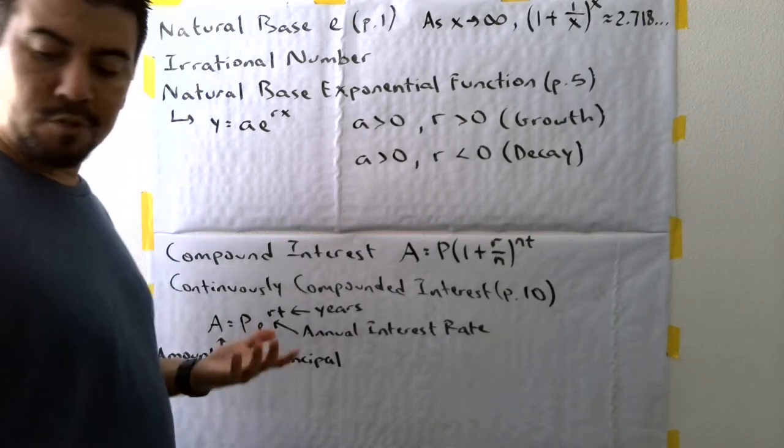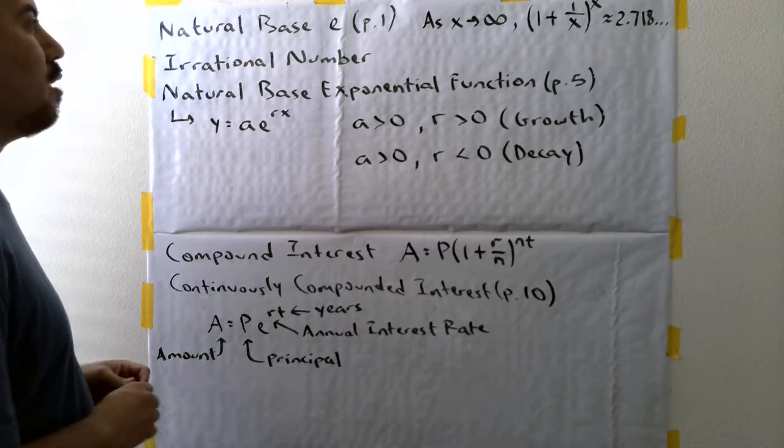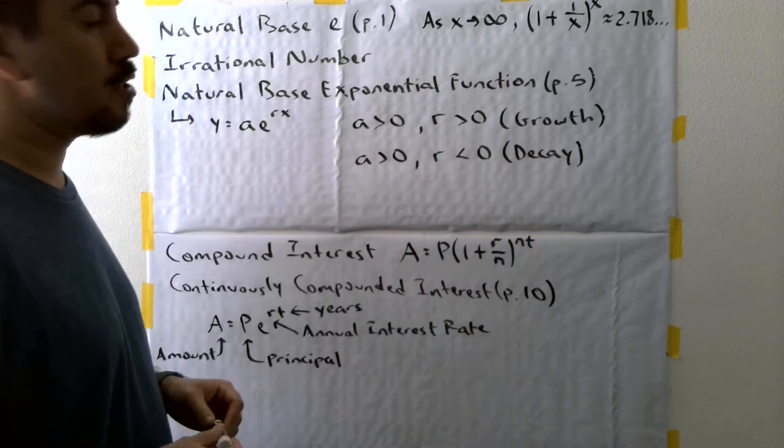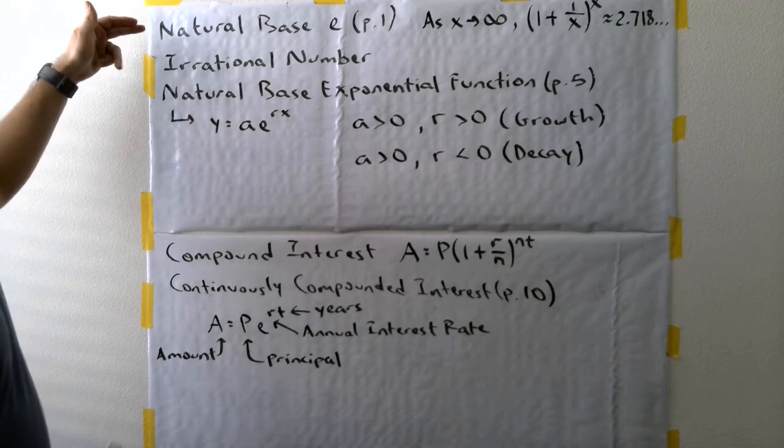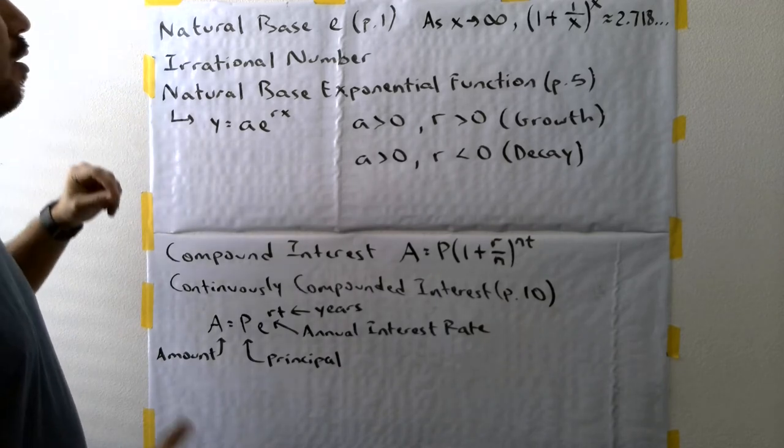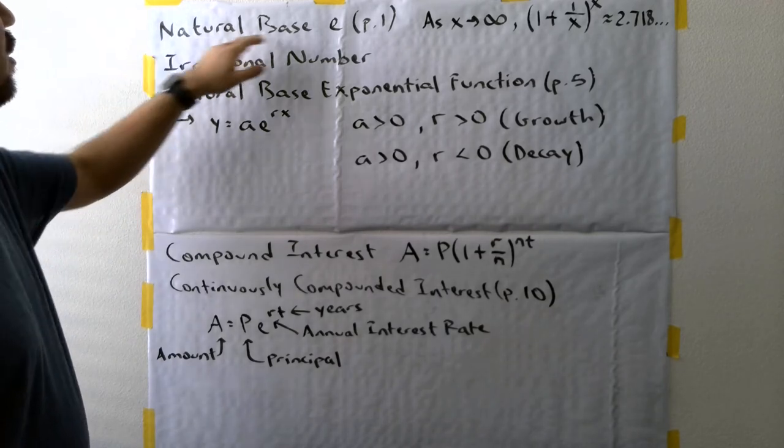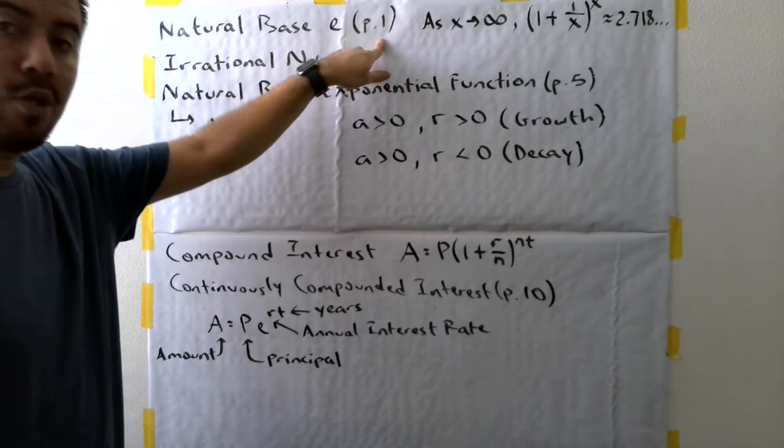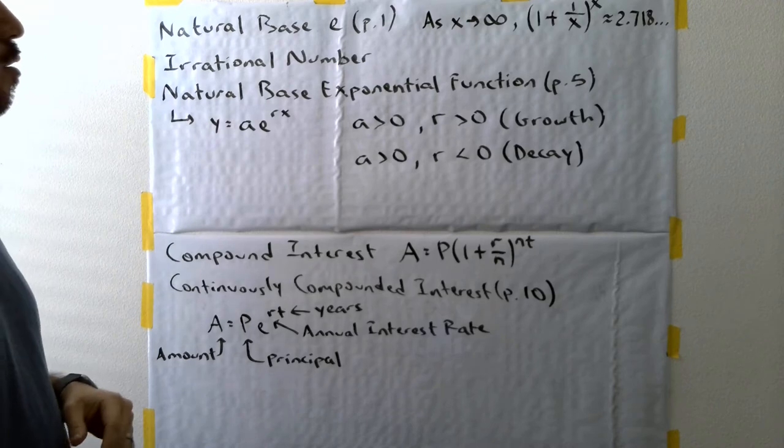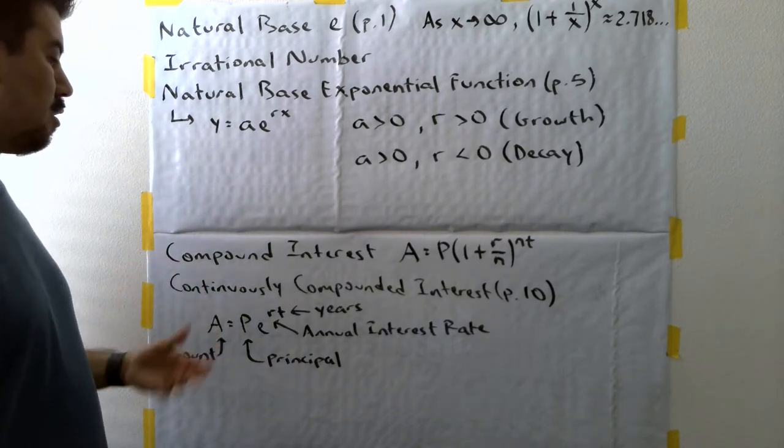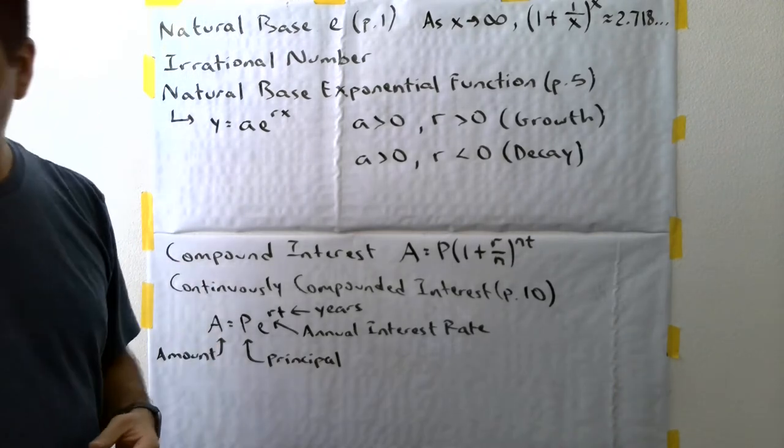In this video, I want to explain to you how some of the vocabulary is going to appear in this section on the natural base E. We have some of the definitions or the vocab that's going to appear. The primary focus is on this term, the natural base E. You're going to find that on page one of your notes. There are some other terms that I'm going to make you familiar with, as well as review a couple things from the previous section.